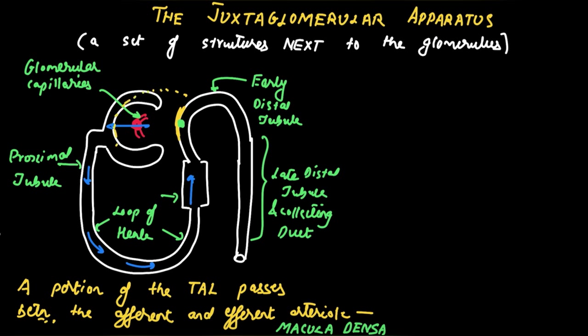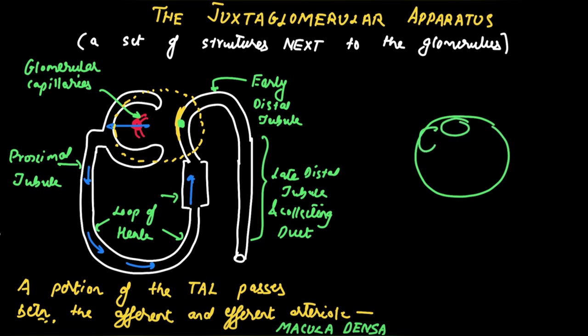The macula densa and the region surrounding the efferent and afferent arteriole is where the juxtaglomerular apparatus lies. The macula densa is the first portion of the juxtaglomerular apparatus, and it senses the amount of NaCl in the tubular fluid.